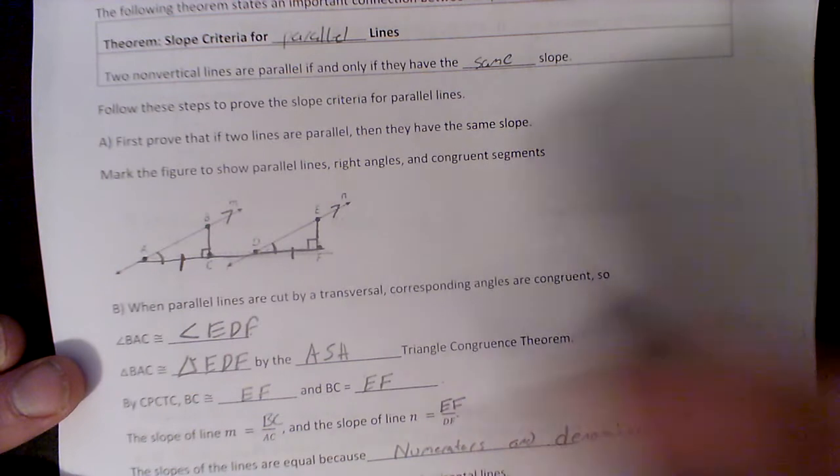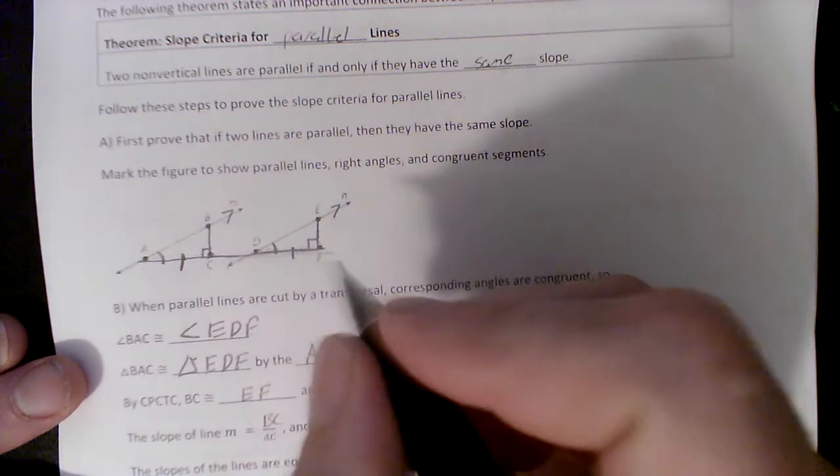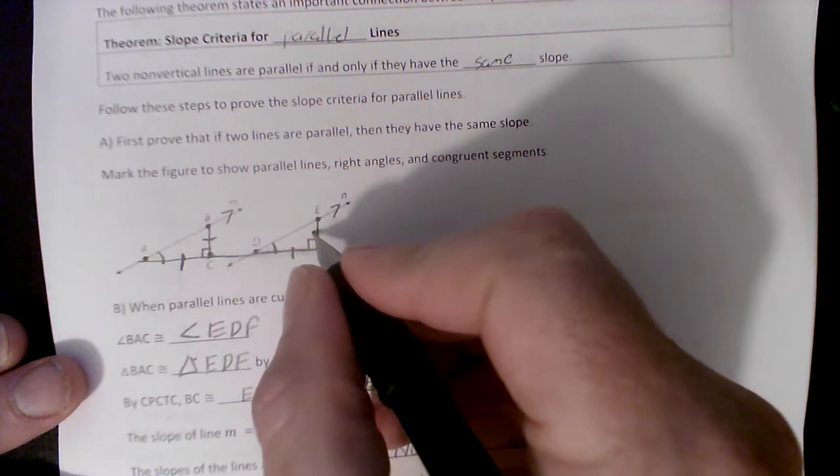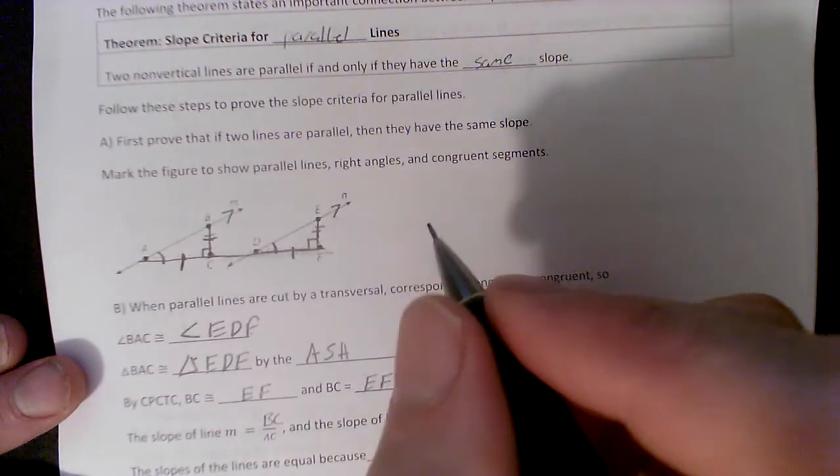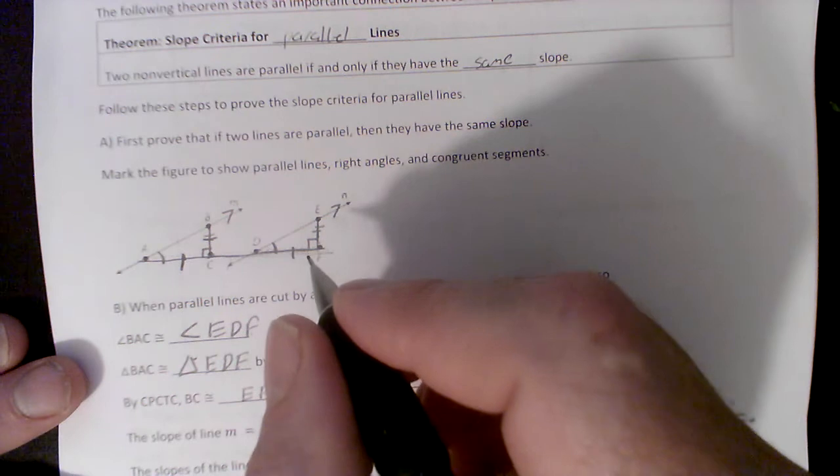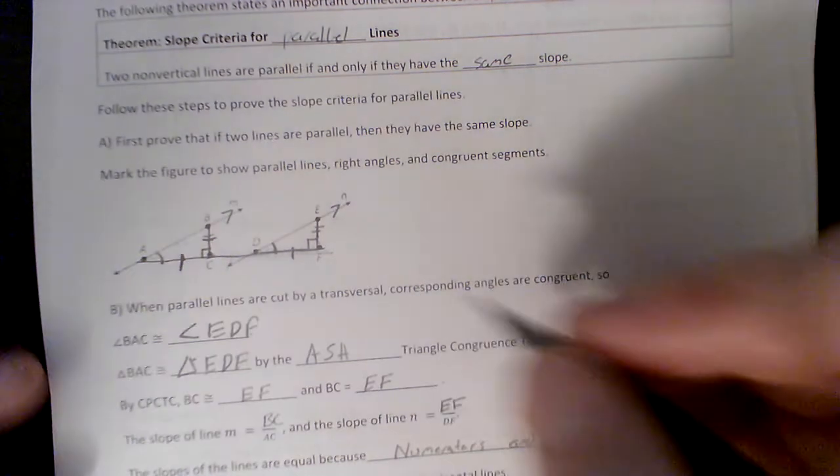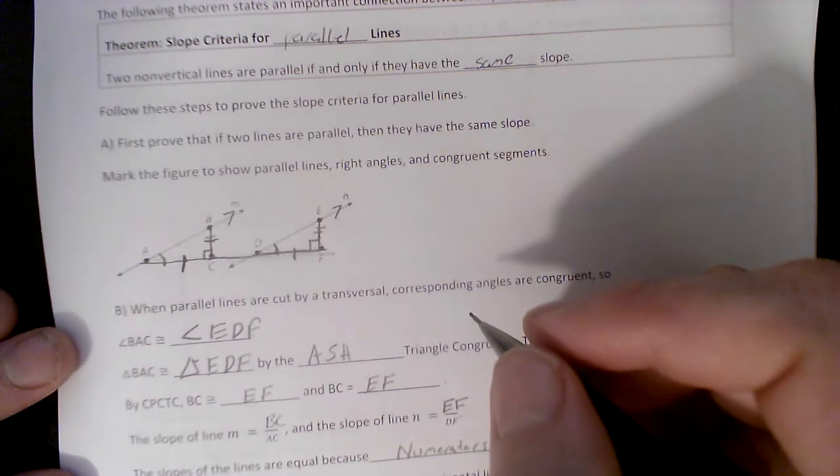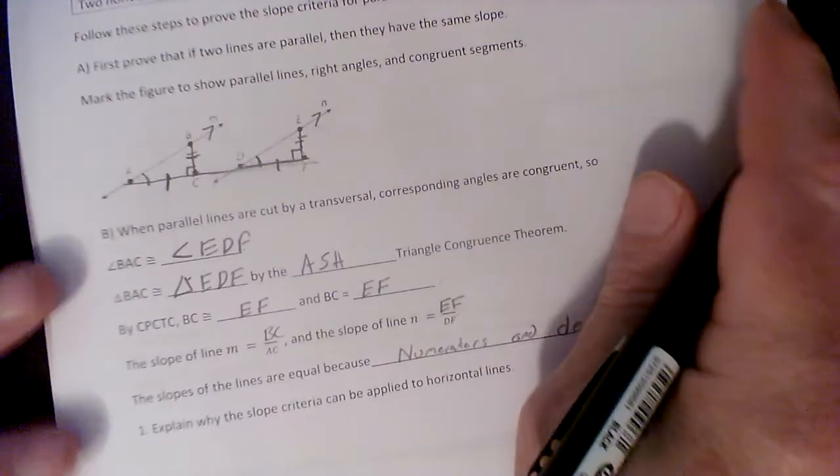So by CPCTC, then BC, which is right here, is equal to EF, which is right here. And EF, which I think I've already marked. Hold on a second. Oh, and they're also equal to each other. So then you know this.